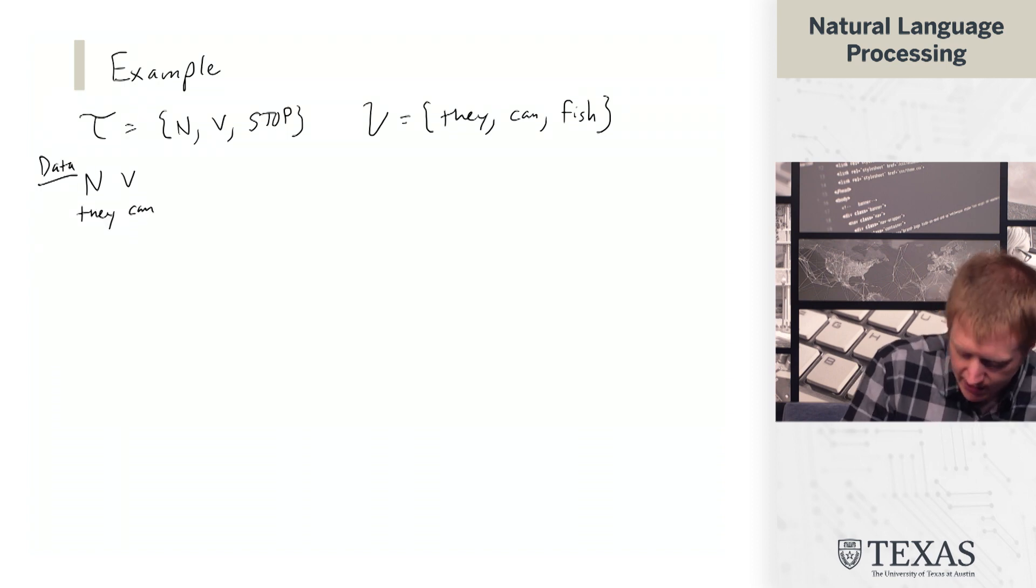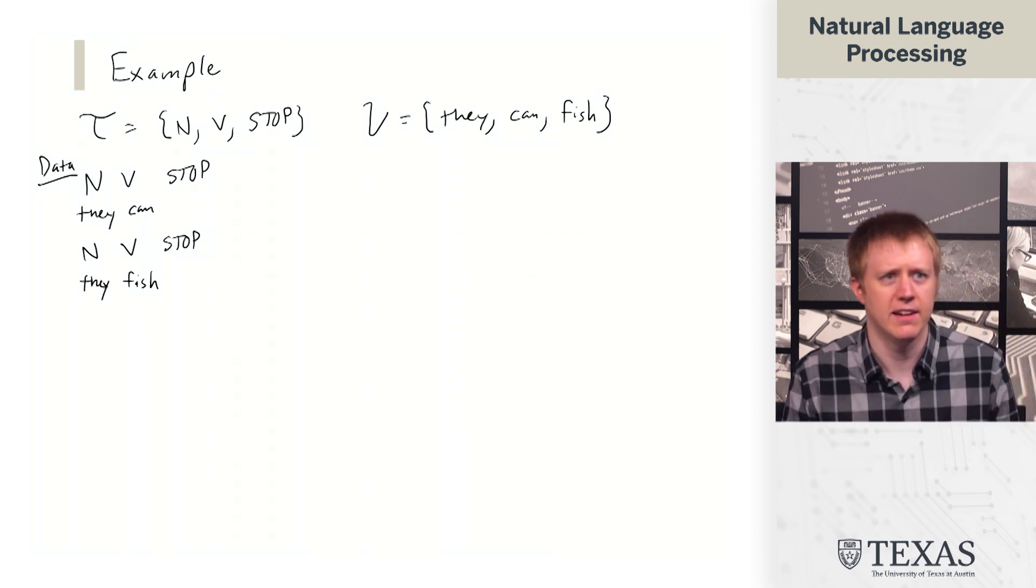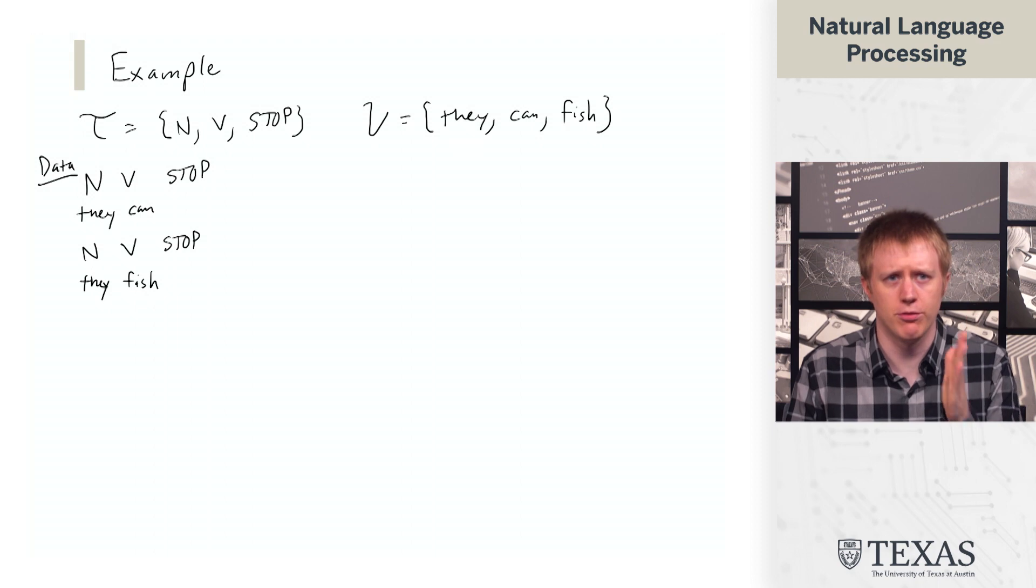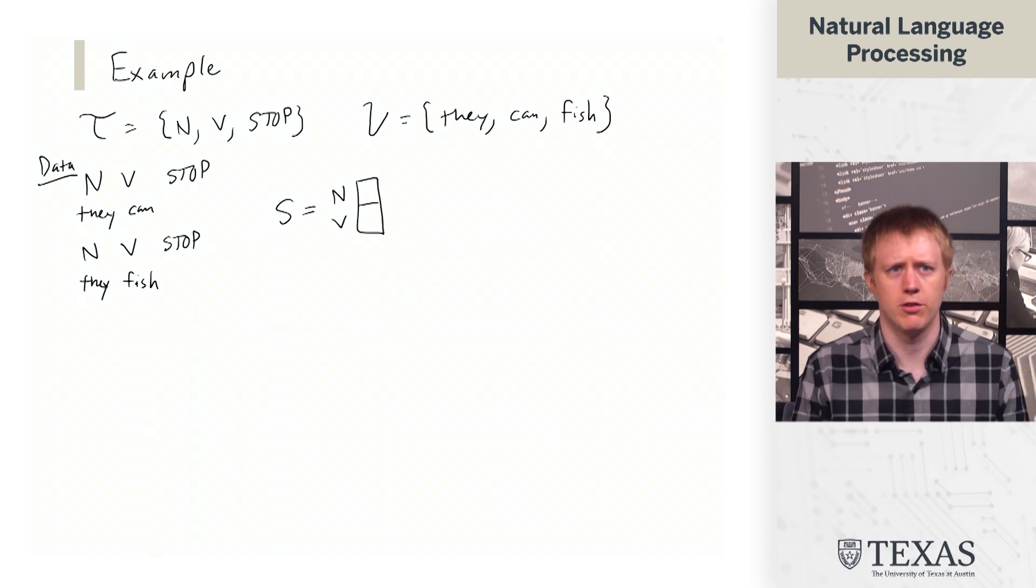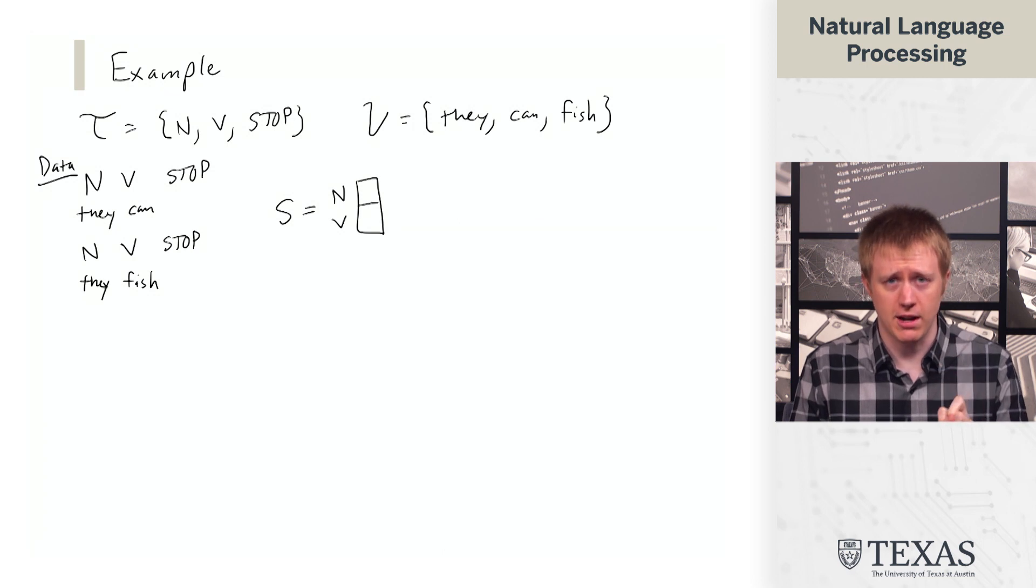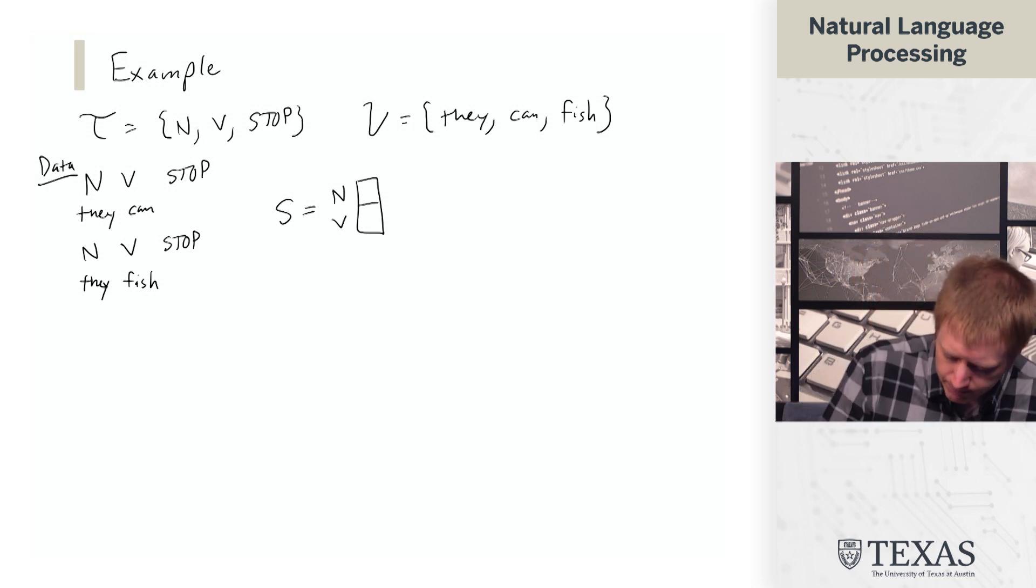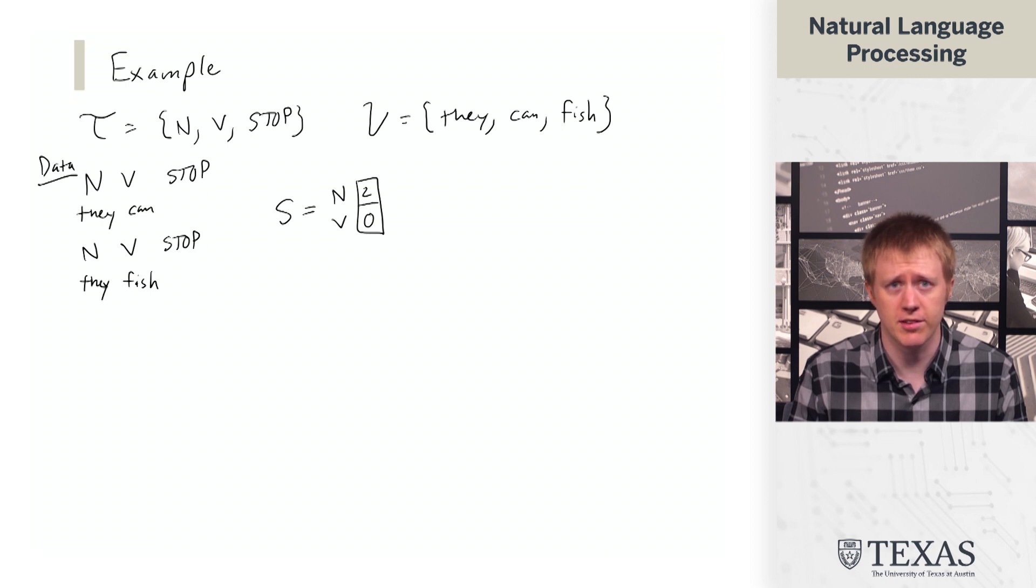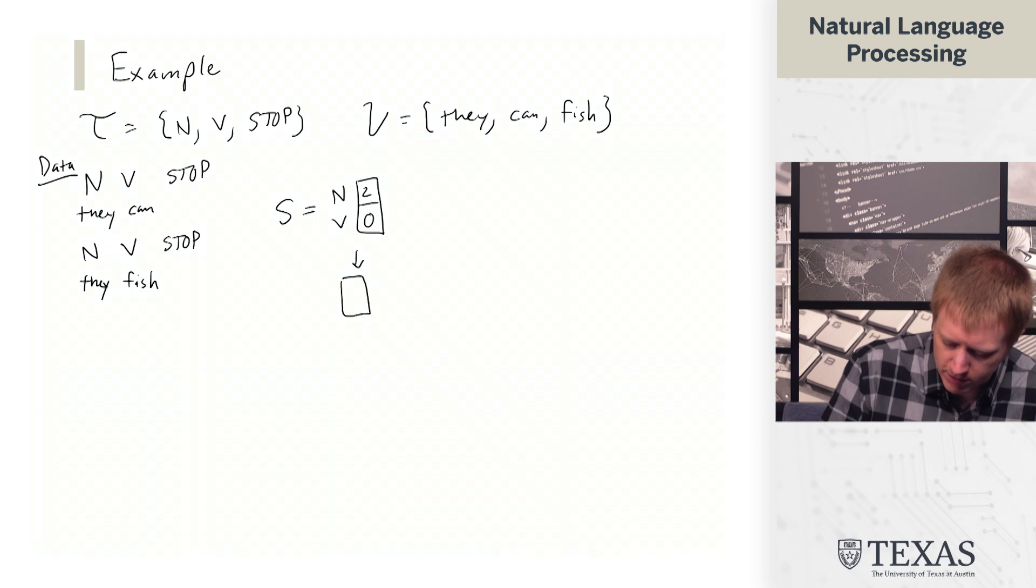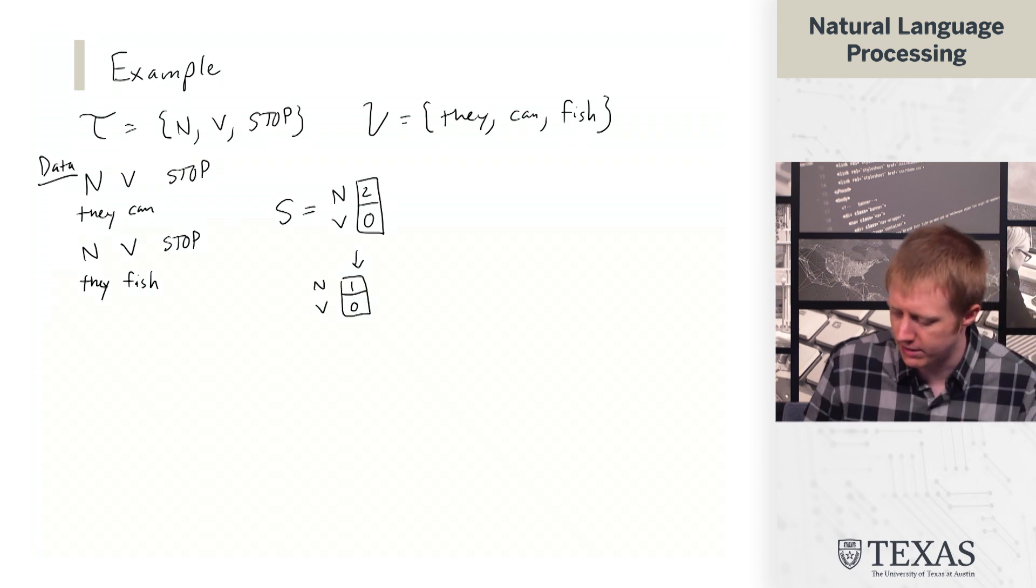Remember, these are going to be labeled instances. So we have they can and they fish. And each of these is labeled as noun, verb, stop. So if we think about the start probabilities, remember that this is going to be a vector with two positions, n and v. So technically it's defined over the entire tag set, but stop is never going to be the first thing in the sentence. So we're just going to drop it and not show it here. And we can count up our occurrences here, and we get two sequences that start with n and zero that start with v. And so when we normalize this, we get probability one and probability zero for n and v.